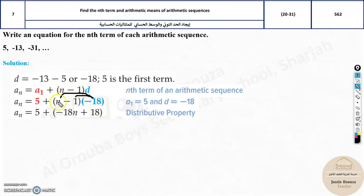You multiply this negative 18 to n. And you multiply the negative 18 to negative 1. It will be positive 18. And then simplify as much as possible. You can see 5 and 18 can be simplified. It will become 23. So, this a_n is the simplified formula. And that is the nth term.